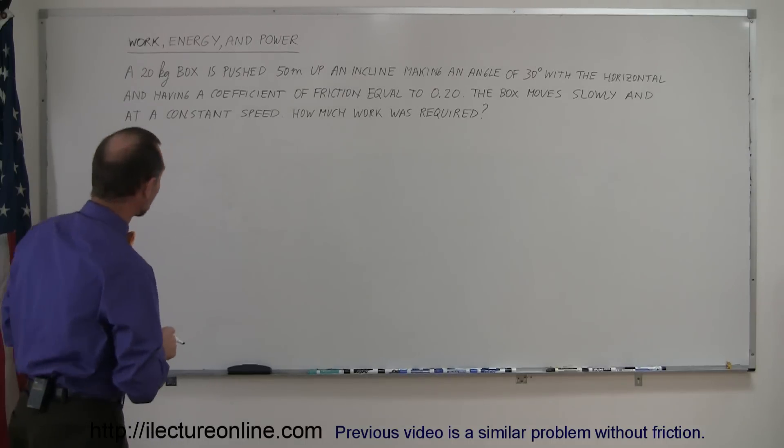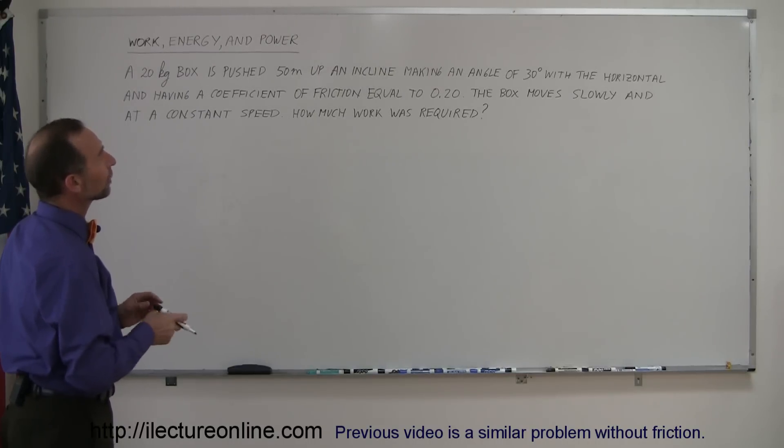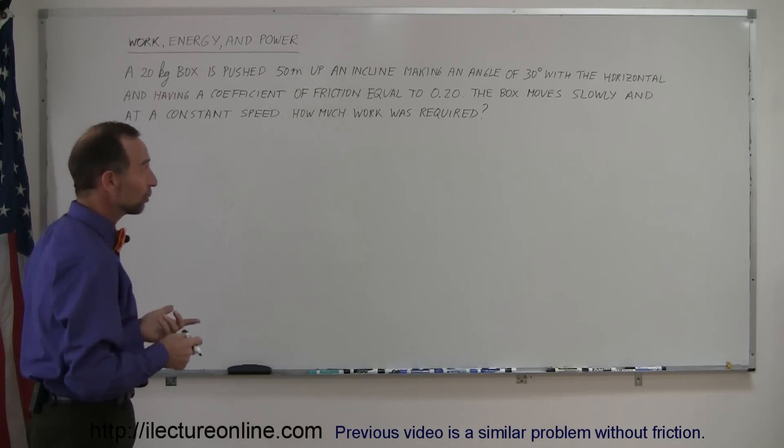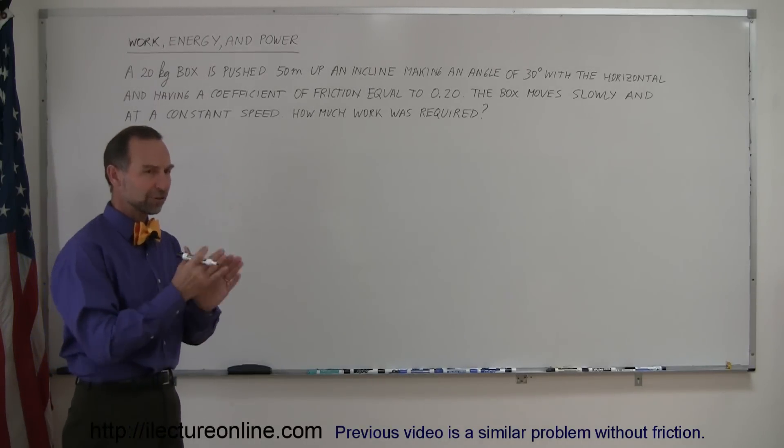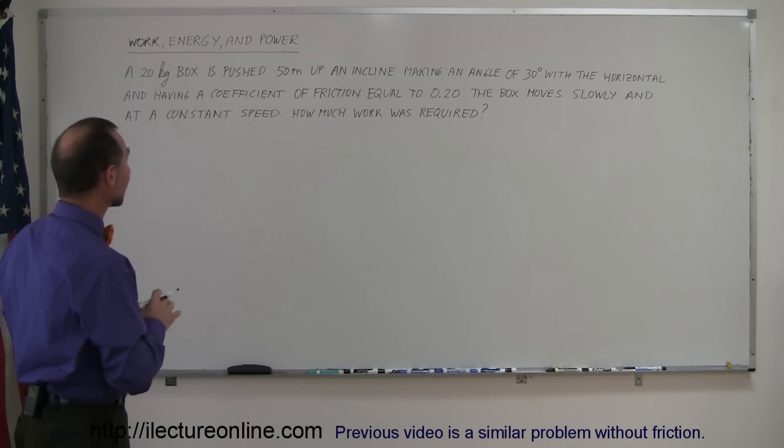So, take a look. The problem says a 20 kilogram box is pushed 50 meters up an incline, making an angle of 30 degrees with the horizontal, and having a coefficient of friction equal to 0.20. So, now there's friction between the box and the incline.